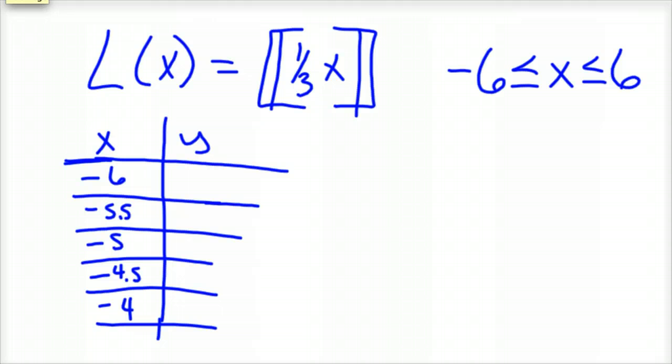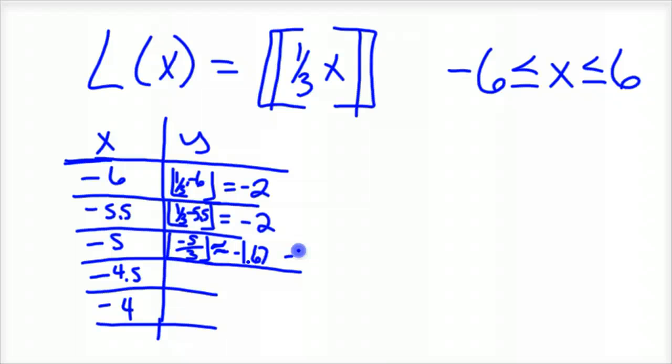So negative 6, if you apply that function to it, I'm just going to use the lowercase brackets here. That would be 1 third times negative 6, which is negative 2. And the greatest integer less than or equal to that would be negative 2. And then you do the same with 1 third of negative 5.5. So negative 5.5 divided by 3 also gives you like negative 1.8 something. So that would also be negative 2. And you just keep going. So negative 5 divided by 3, that's equal to about approximately negative 1 and 2 thirds, or negative 1.67. But when the floor function kicks in, that would be negative 2. So I need to put my floor symbols in there. And so all those are negative 2.